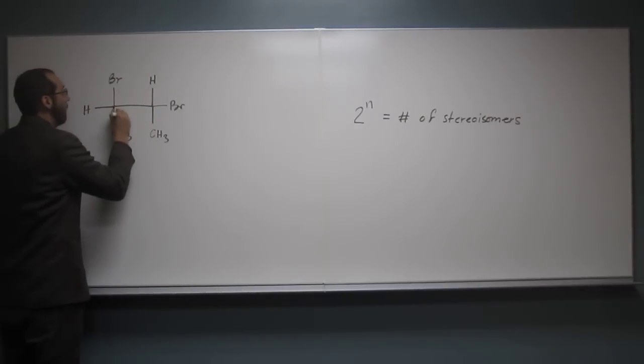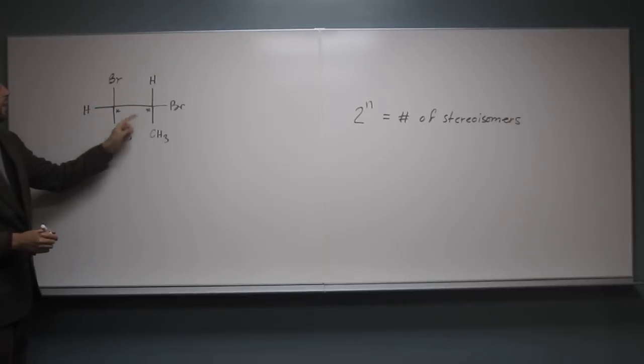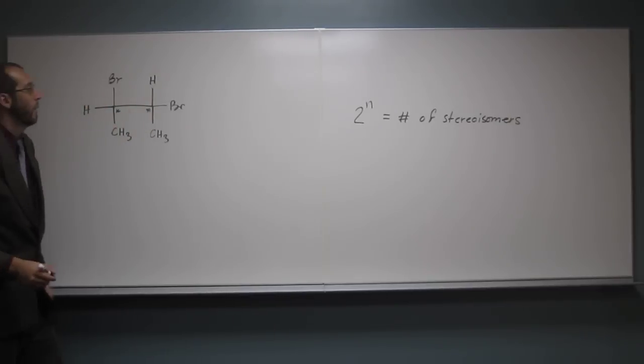So let's figure out how many stereocenters we have. So we've got one, two, right? Does everybody agree with that? Because H, methyl, Br is different, all different than this whole group over here, right?